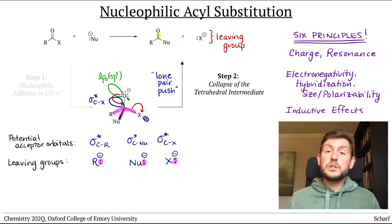First, identify the structures of the possible leaving groups. Here we said they were R minus, Nu minus, and X minus.